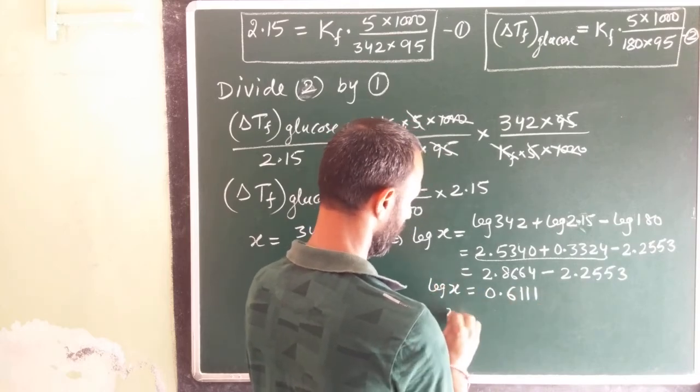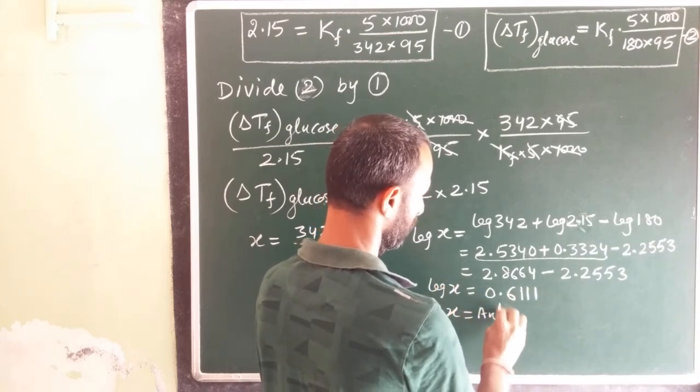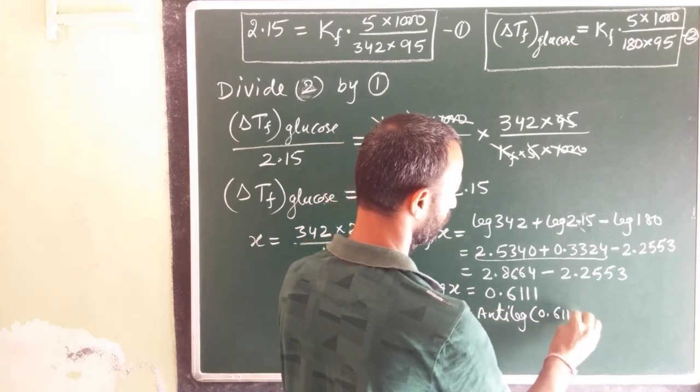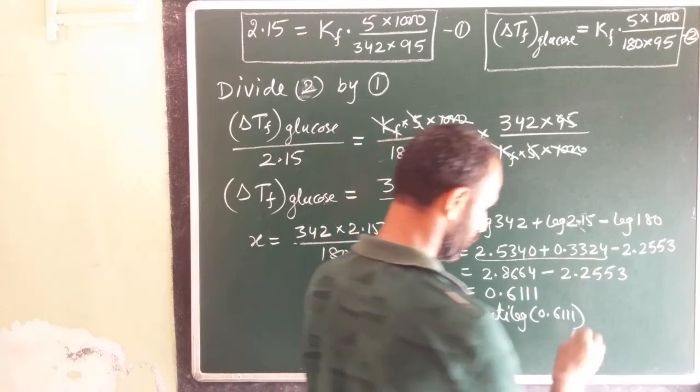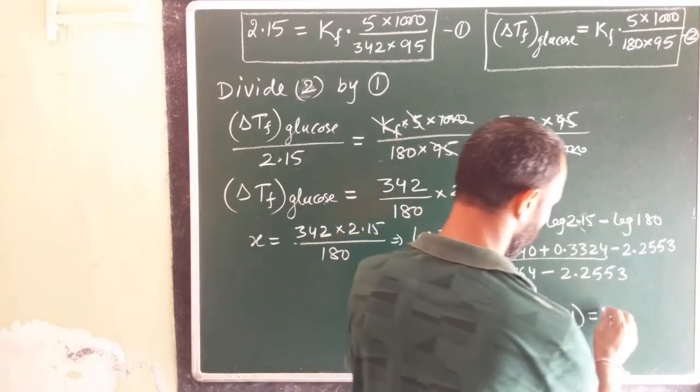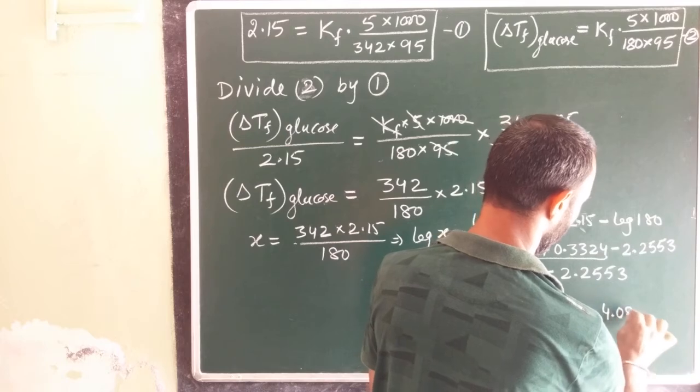From here, x is antilog of this value. Antilog of this value comes out to be 4.084.